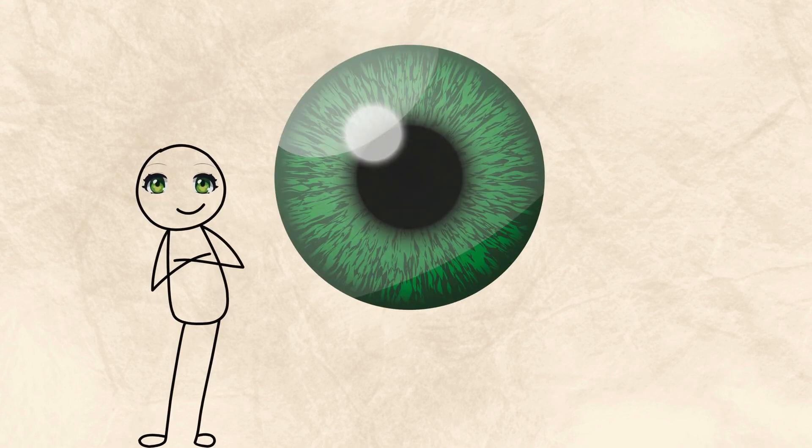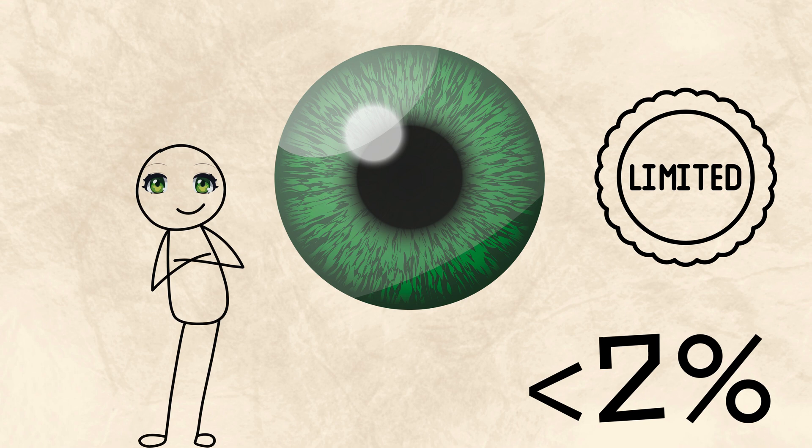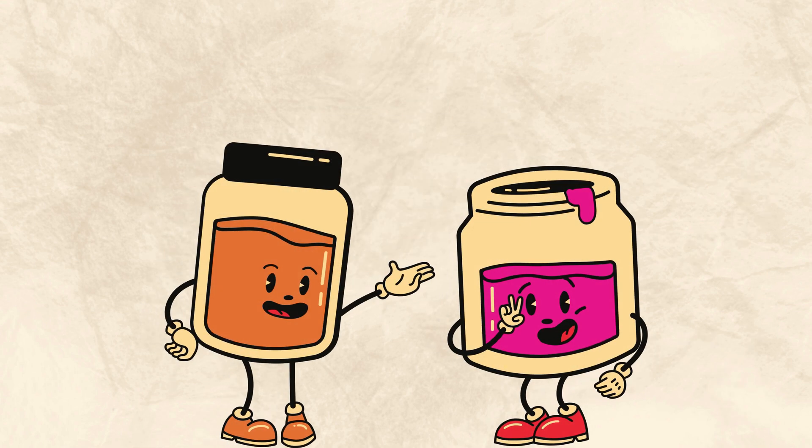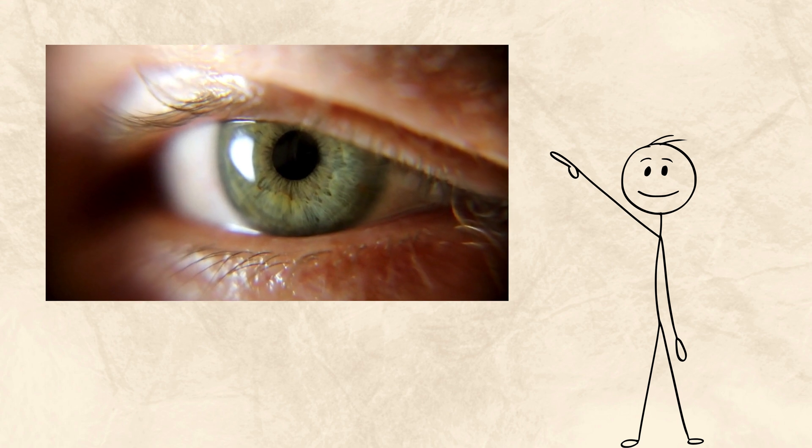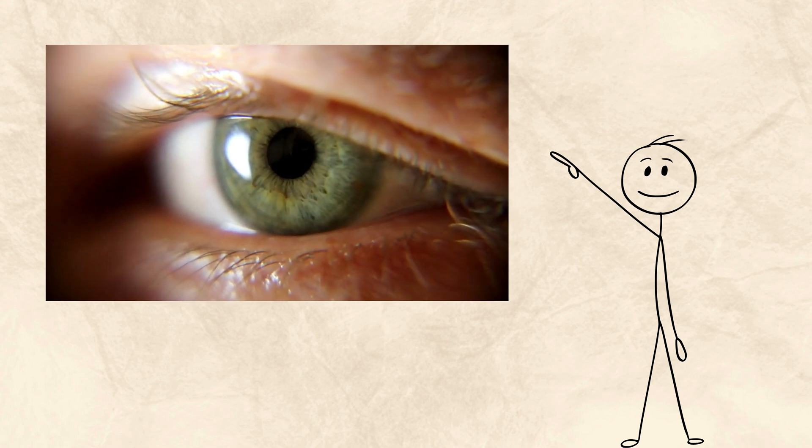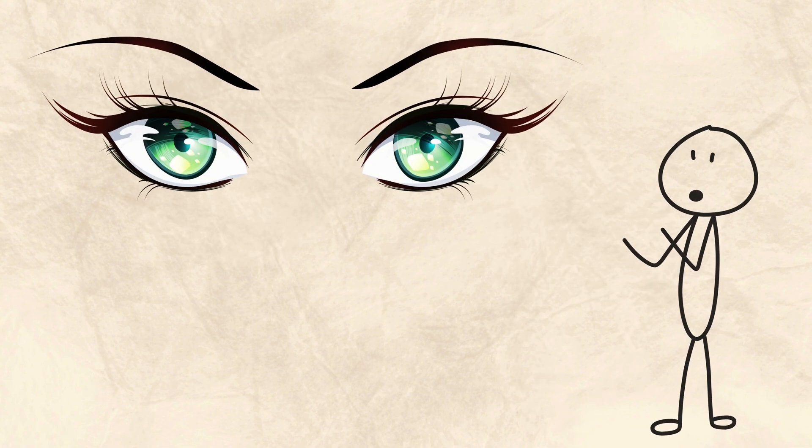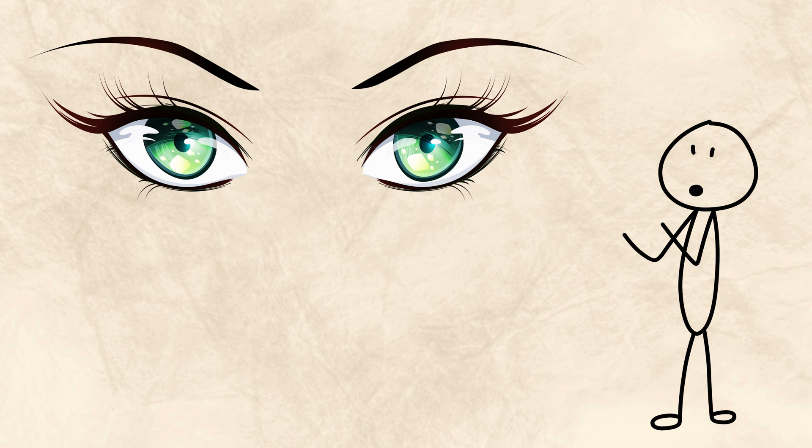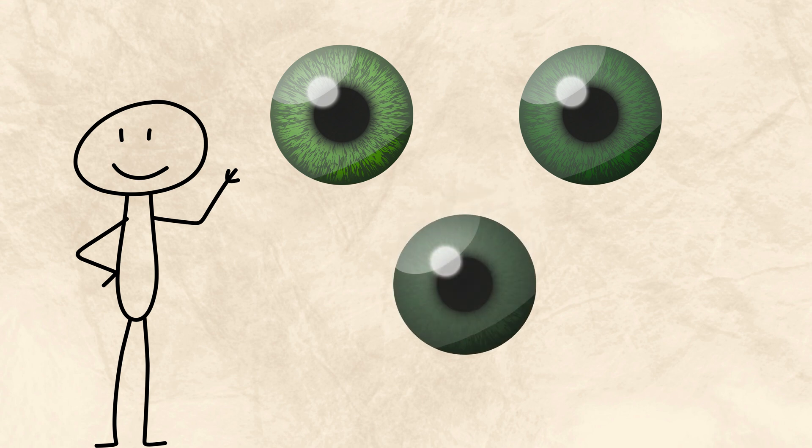Green eyes are rare—less than 2% of the world has them. They are not a single color but a combination. A small amount of melanin darkens the iris. A yellow pigment called lipochrome tints the light. When these balance just right and scattering is added, the result is green. Green eyes are not steady. They shift with lighting. Sometimes moss, sometimes jade, sometimes storm gray. They hold energy just beneath the surface—quiet but intense.